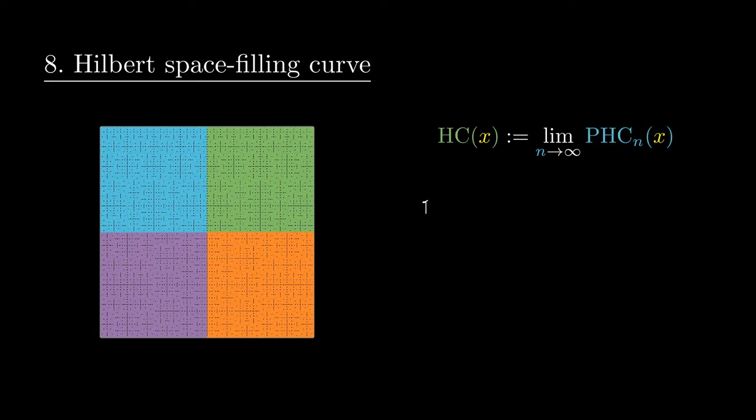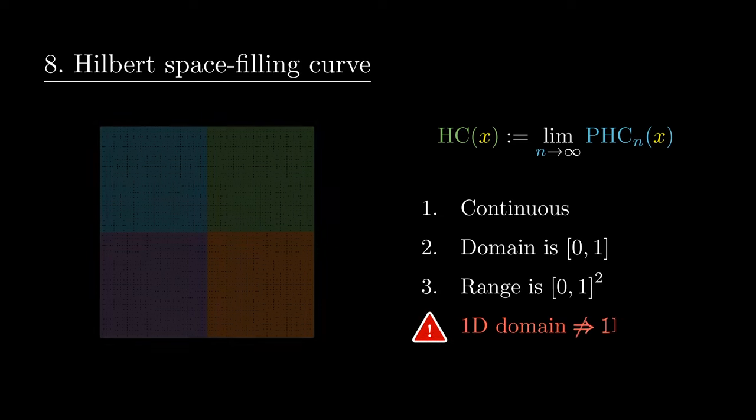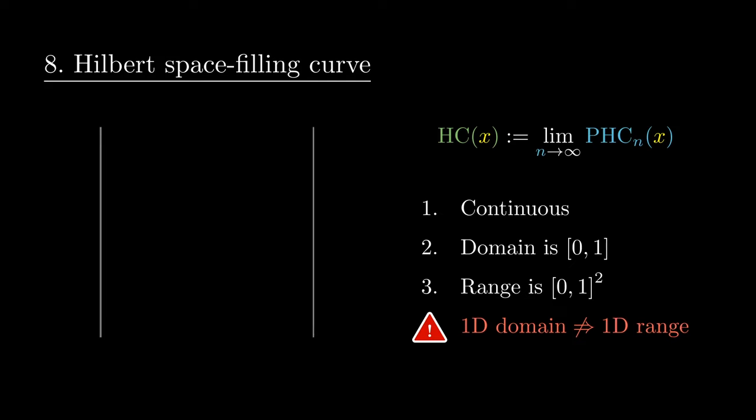This function is continuous. Its inputs are one-dimensional, but its outputs are two-dimensional. This tells us that we can in fact use one continuous line to cover two-dimensional space.